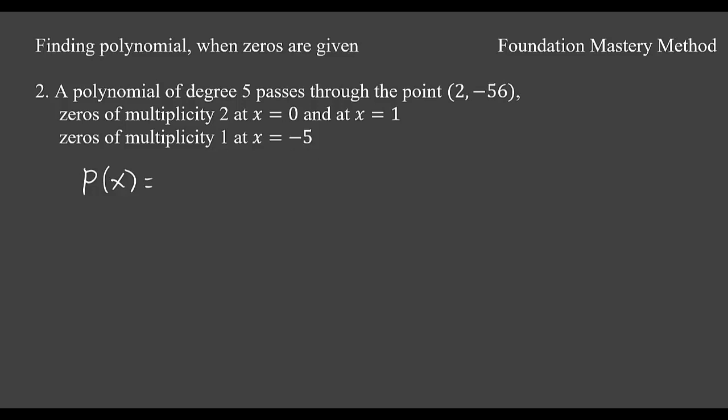Since we are not given the leading coefficient, we keep it as a constant, call it a. So then you have (x minus 0) squared, then you have (x minus 1) squared, and then you have (x plus 5).